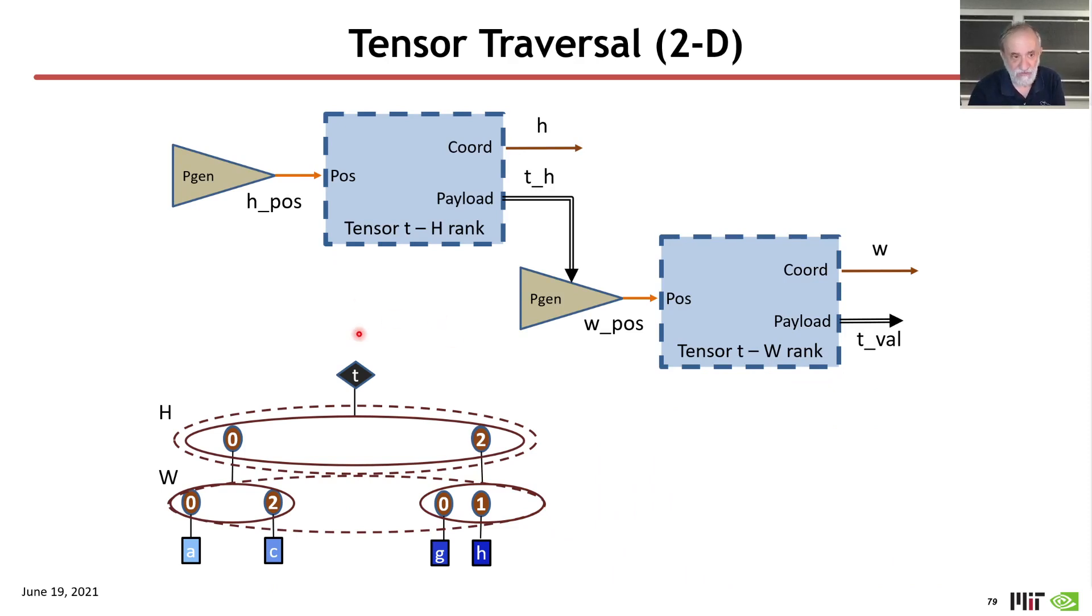In this case, I have two storage arrays, one for the top fiber, the fiber in the top rank, and that one looks just like we were doing before, except for what's coming out of it is information, which is used to configure this position generator that is saying, where is the fiber that I want to access here? And then I step through that fiber, generating the values.